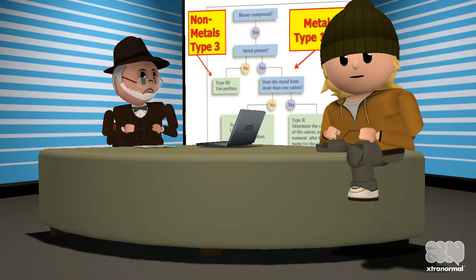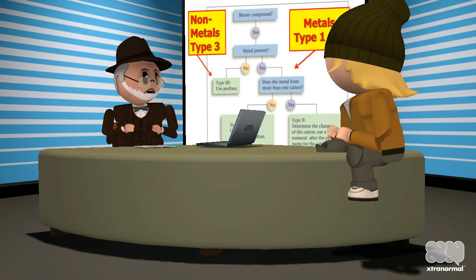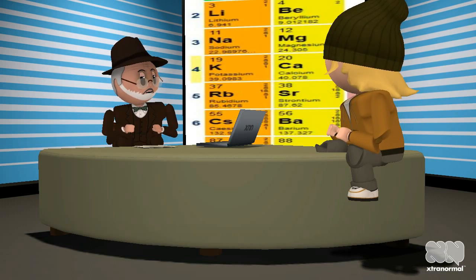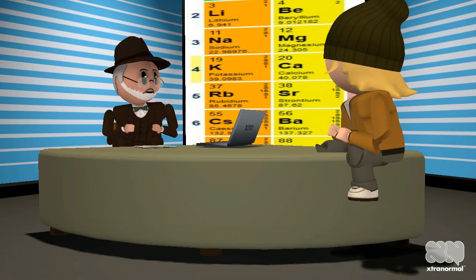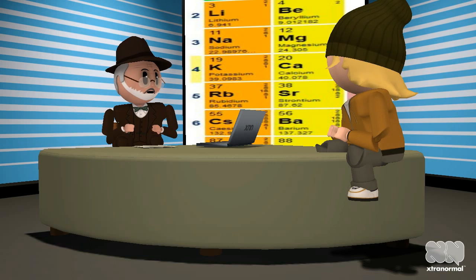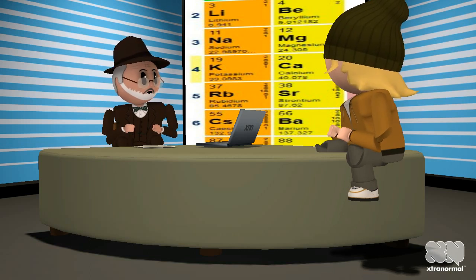What do you mean by metal? Metals are the elements that can be found on the left side of the periodic table. The main group metals, group 1A, 2A, and some from group 3A, or groups 1, 2, 13, will follow type 1 naming because they will always have the same charge.